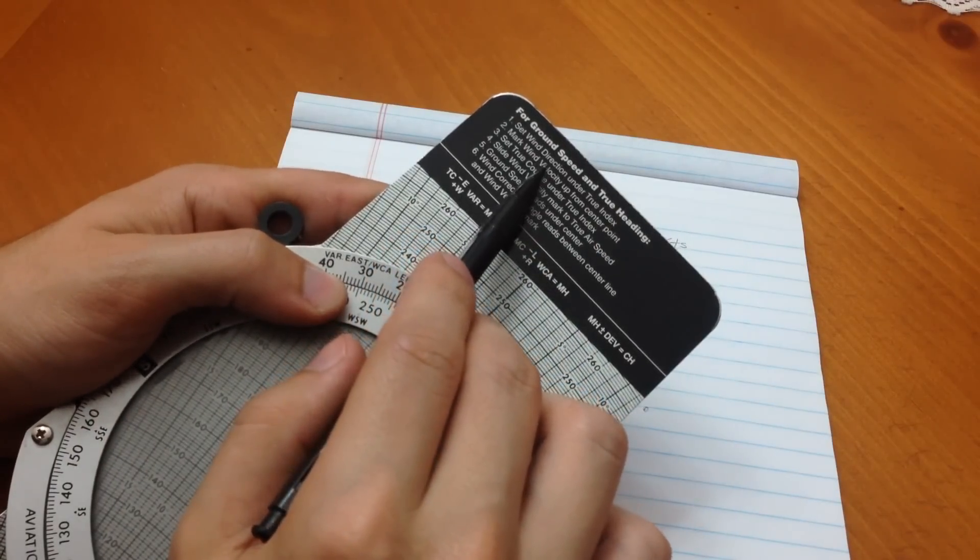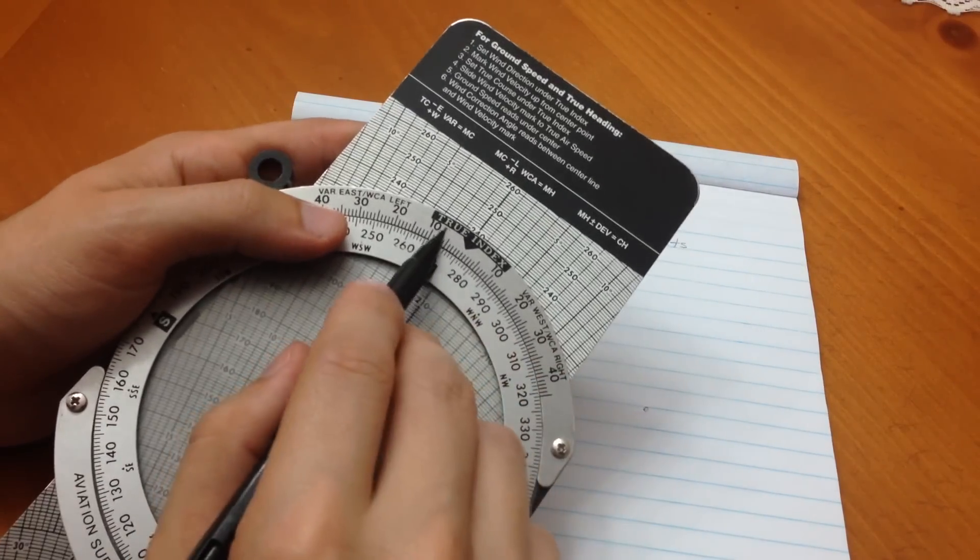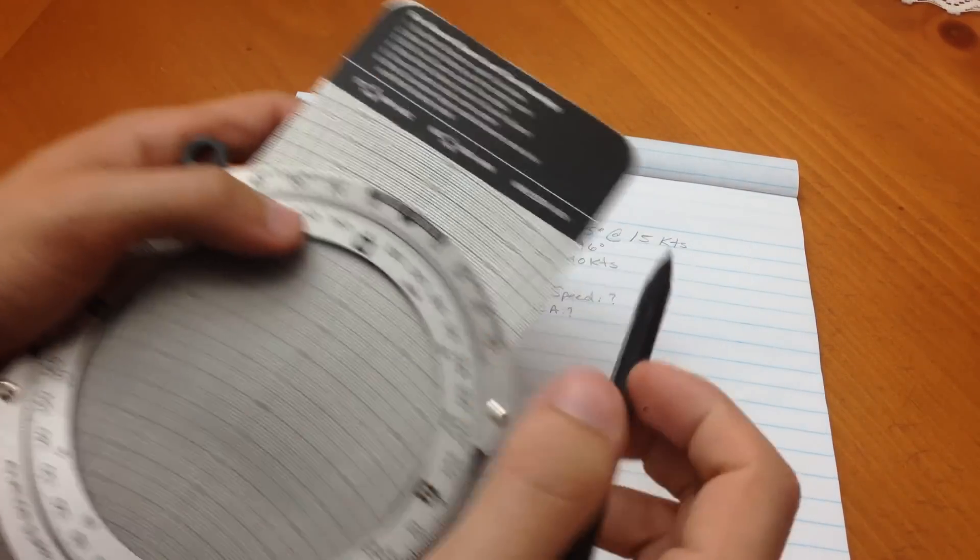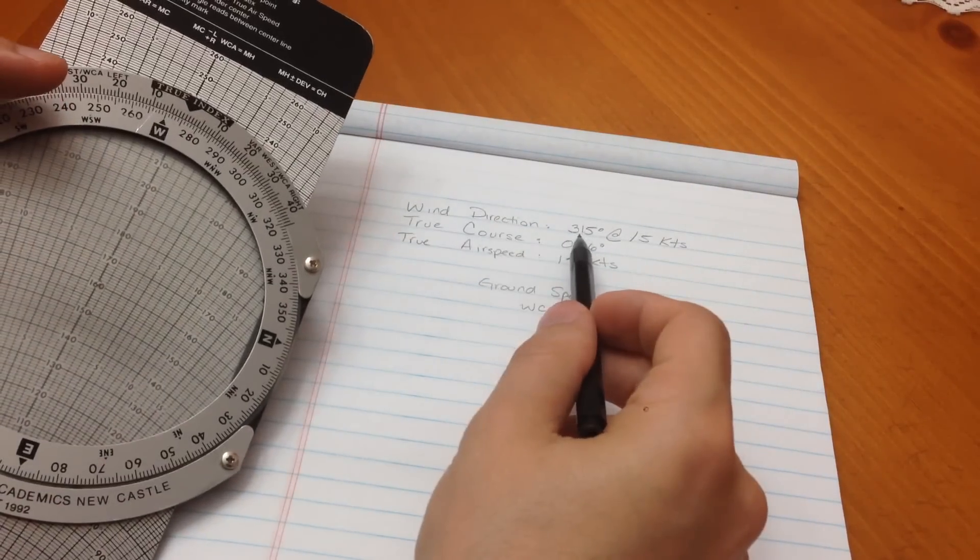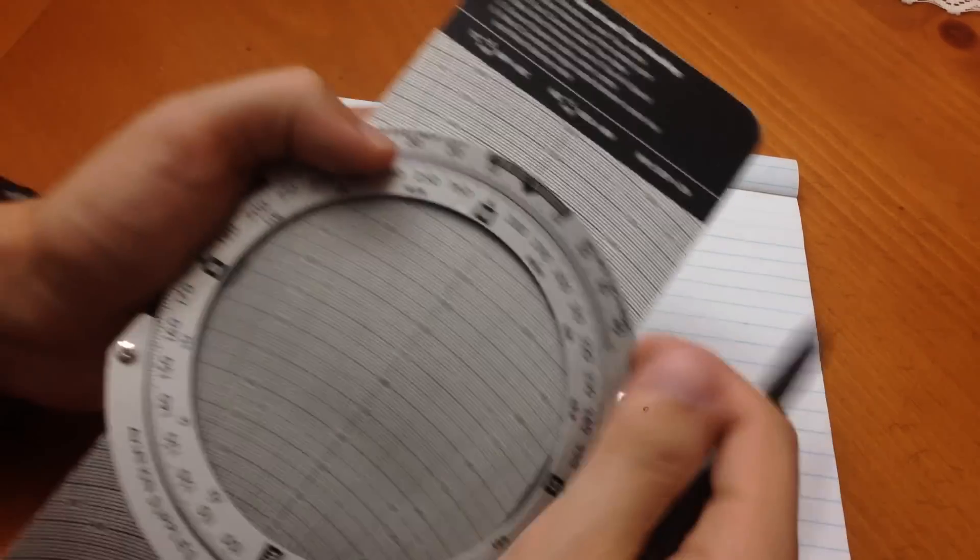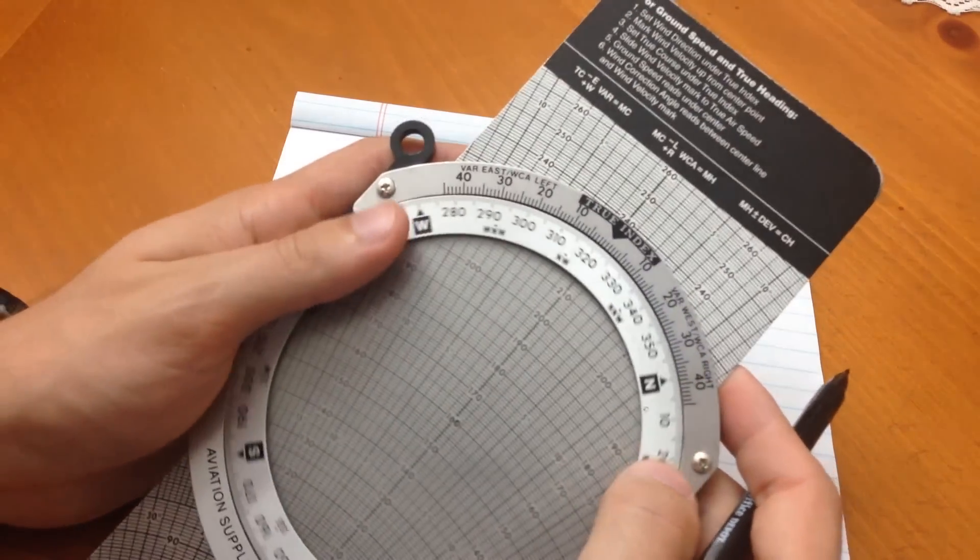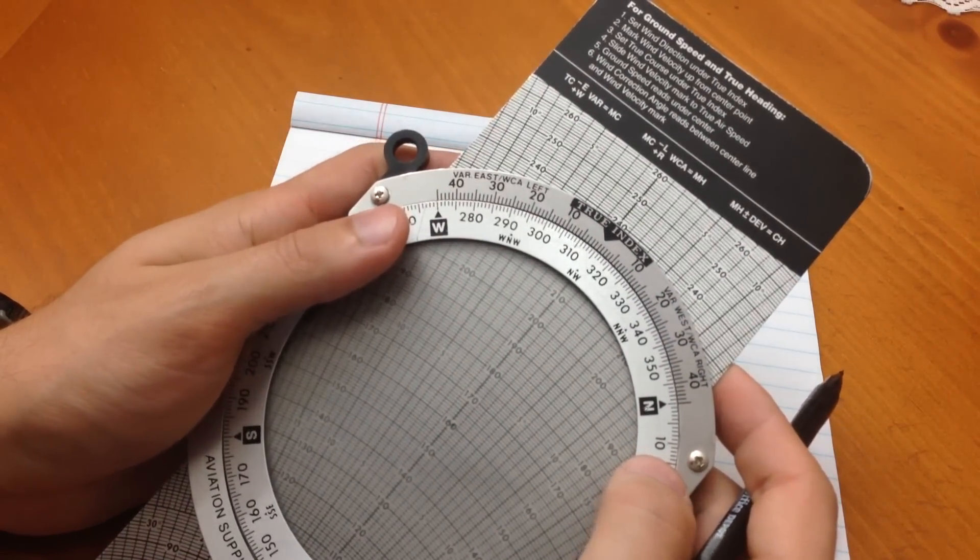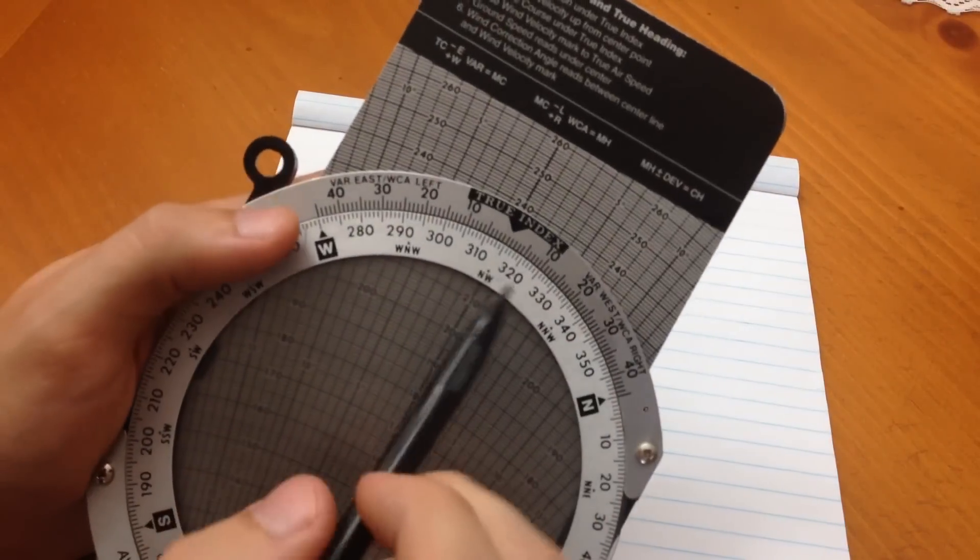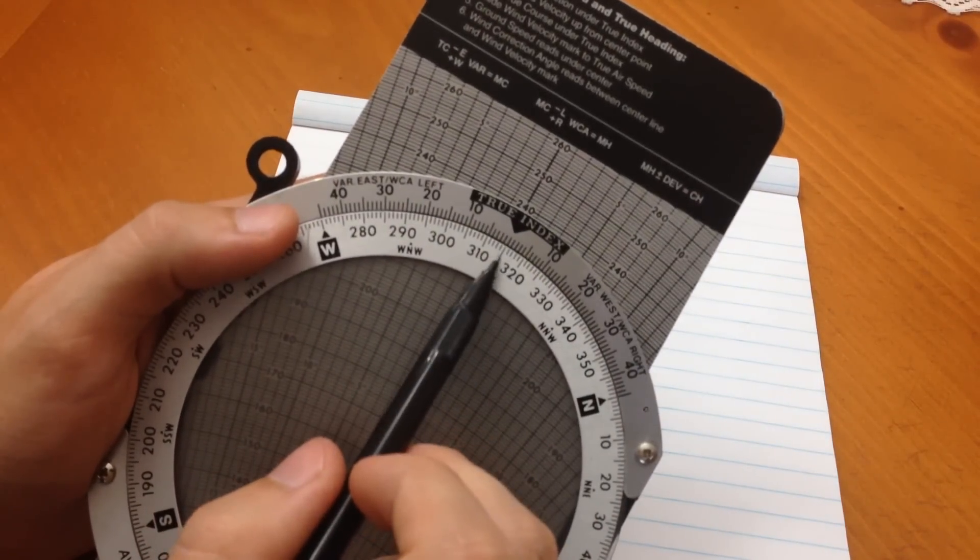The first step is to set the wind direction under true index, and our true index is indicated by this right here. Our wind direction for this example is 315 at 15 knots, so we're going to go ahead and rotate the wheel to 315 knots, which is right here. Notice, true index, and our wind direction is right under it.